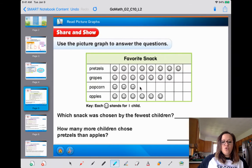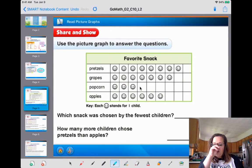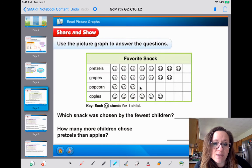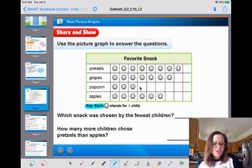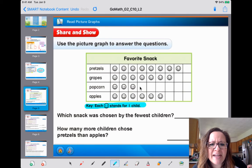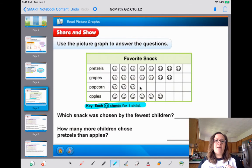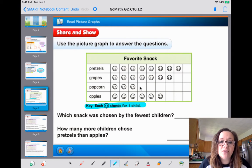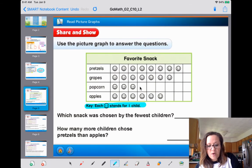Okay, let's go on to the next one. Use the picture graph to answer the questions. Okay, which snack was chosen by the fewest children? Now, if you look at this one, it's about favorite snack and they used a smiley face for their symbol, right? They use the same size. Now, look at this. Each smiley face, they are making it super simple for you guys. Look, it stands for one child. You guys are not going to get tricked. Which snack was the fewest? Well, you got to look for the fewest smiles, right? Popcorn only had three. So I'm going to write popcorn.